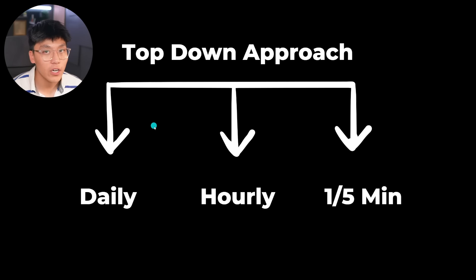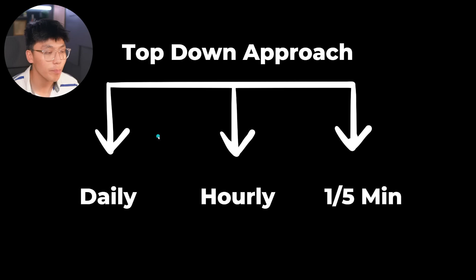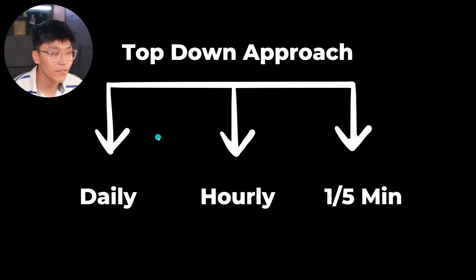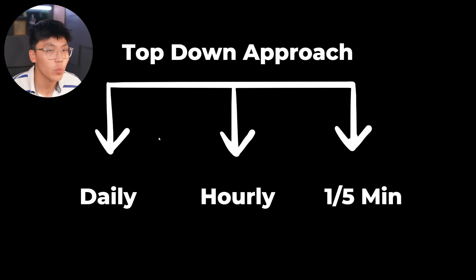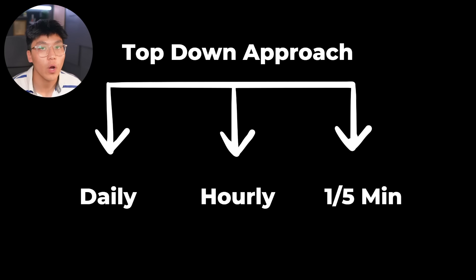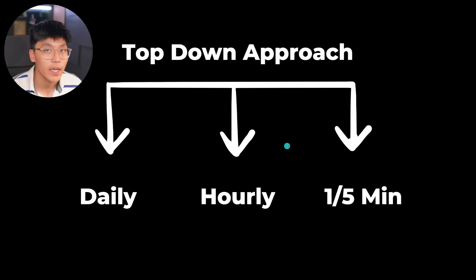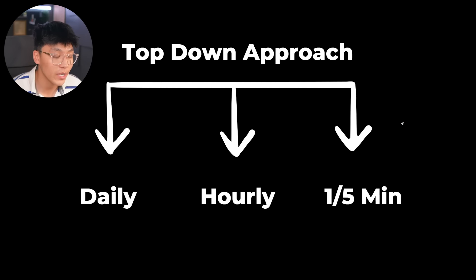Whereas if you start off on the higher time frames such as the weekly and daily, you have a bigger picture of the overall trend of the market. Starting on the daily time frame gives you a bigger lens, a bigger scope of what the general price wants to do. You want to understand if it's bullish, if it's bearish, if it's consolidating, and then go on to the lower time frames such as the hourly chart and then the one and five minute to look for those entries.